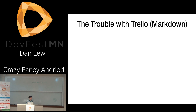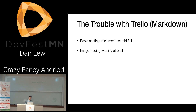I wanted to go over a list about how bad our Markdown parser was. It was functional, but basic nesting of elements would fail. So if you had italics text and then bold text inside of it, that may or may not work. Image loading was iffy at best — if you tried to load one or more images, they may or may not load. There were endless URL parsing issues. We handled naked URLs, meaning if you just type in HTTP Trello.com, we should detect that, but that turned out to be really hard with the parser we had.